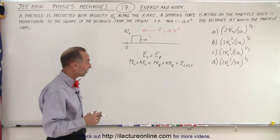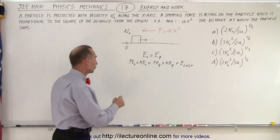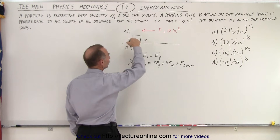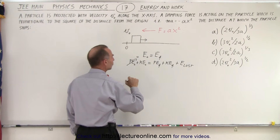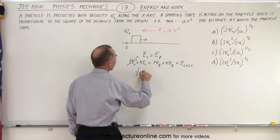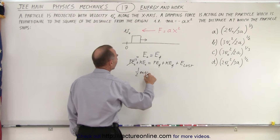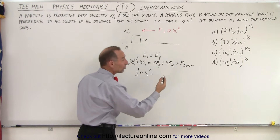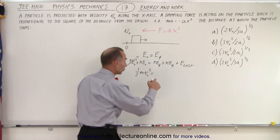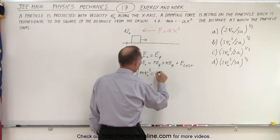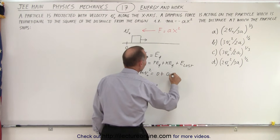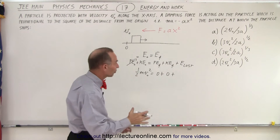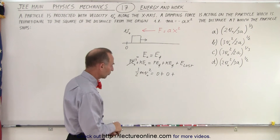What is the initial energy? There's no potential energy because there's no height associated — only kinetic energy initial, which is one-half times the mass times the initial velocity squared. At the end, when the particle comes to a stop, there's no potential energy and no kinetic energy — only energy lost due to the opposition of the retarding force.